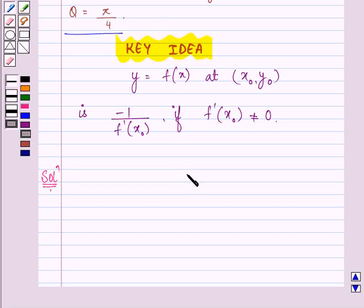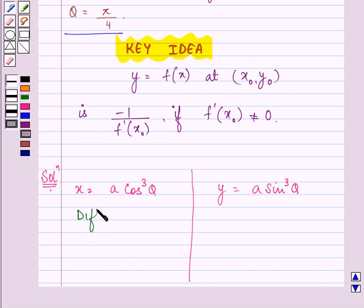Now here we have x equal to a cos cube theta and we have y equal to a sin cube theta. We will be differentiating x and y with respect to theta.